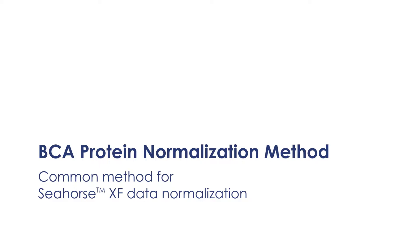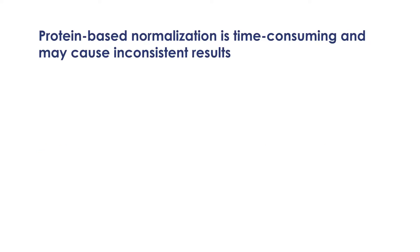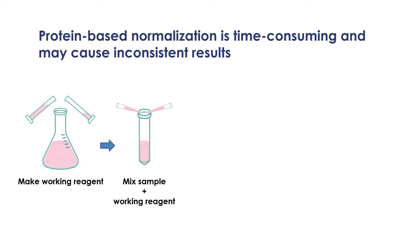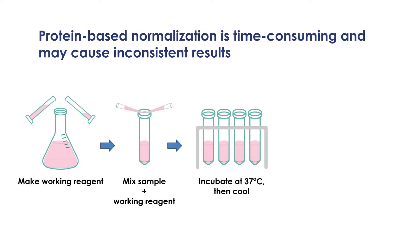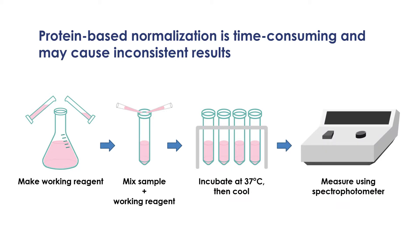Currently, researchers normalize Seahorse results using protein analysis assays such as BCA to minimize the effects of non-uniform cell seeding. The assay requires preparation of protein standards as well as BCA working reagents. The test samples are mixed with the working reagents and then incubated for 30 minutes at 37 degrees. Finally, the mixture is cooled and the protein contents are analyzed using a spectrophotometer.